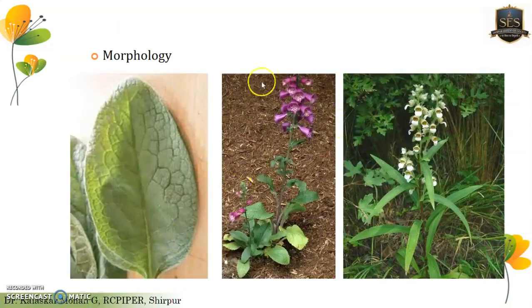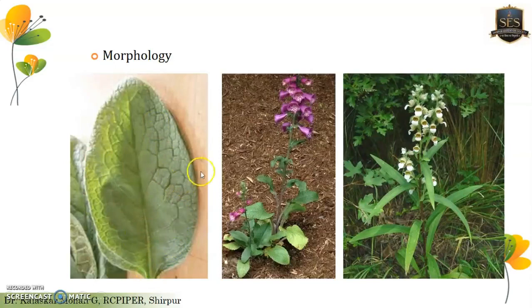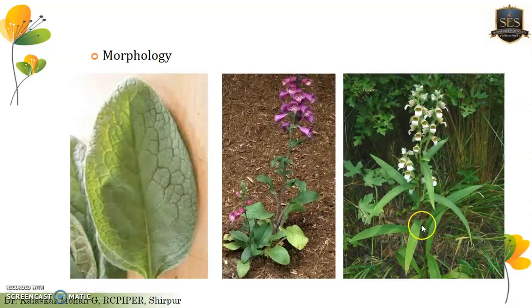There are typical morphological differences between Digitalis purpurea and Digitalis lanata. Digitalis purpurea has pubescent leaves with a velvety touch, ingressed veins when observed from the upper side, and oval-shaped succulent leaves. Digitalis lanata, as the name suggests, has lanceolate-shaped leaves — 'lanata' itself indicates the lanceolate shape. These are the key differences in morphology between the two species.